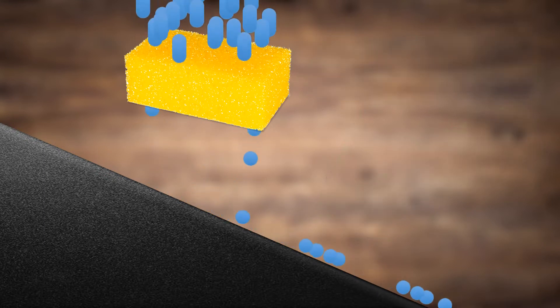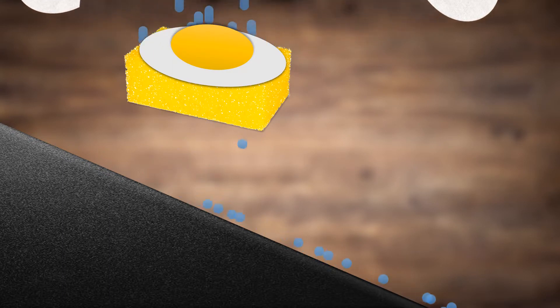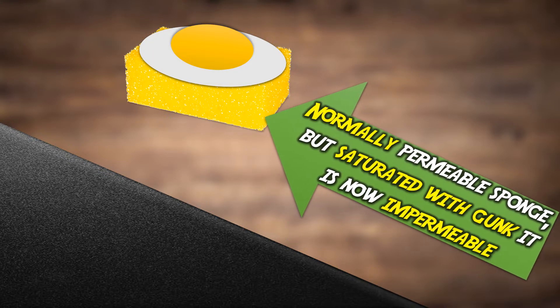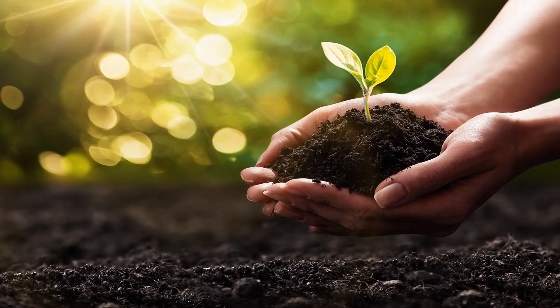But suppose I was to crack an egg on top of the sponge to stop water from flowing through it. Now we have a normally permeable sponge, but now it's saturated and clogged up with gunk, making it an impermeable surface. Now let's take this analogy and apply it to soil.